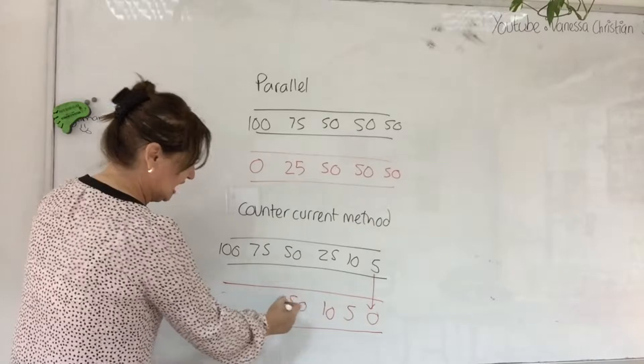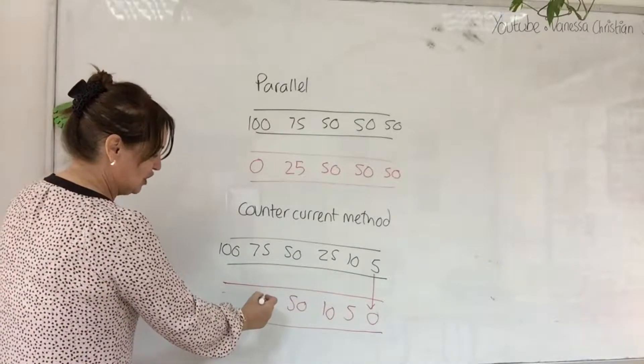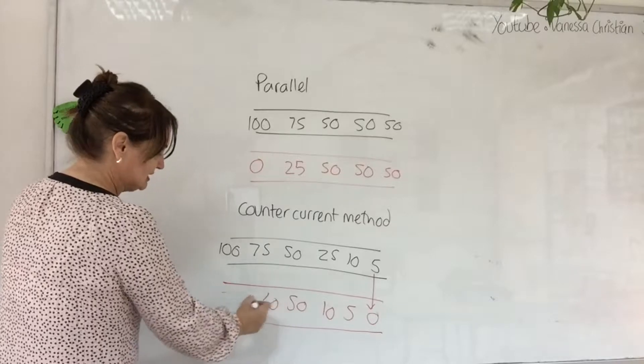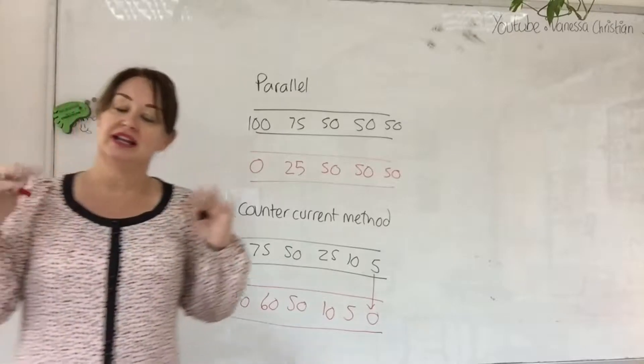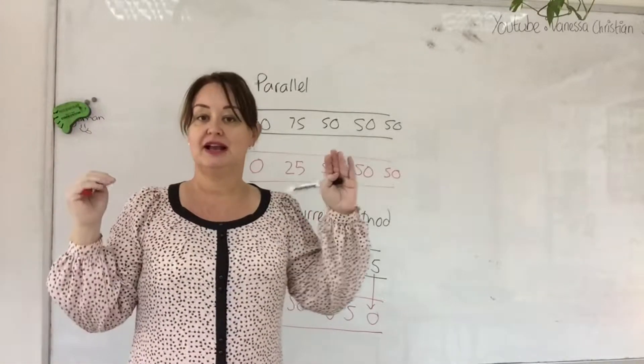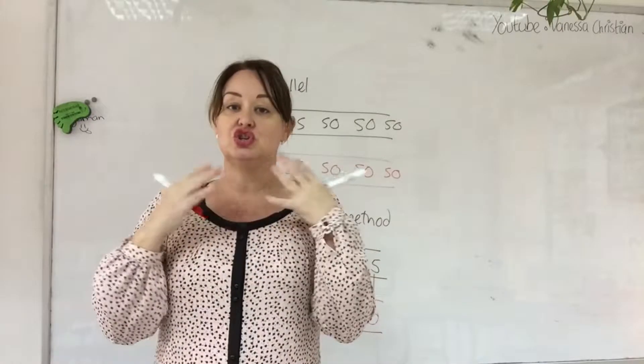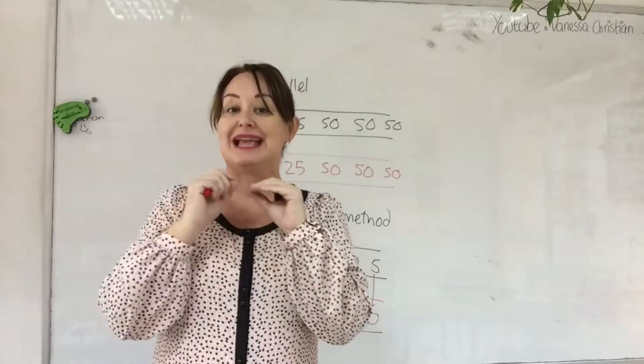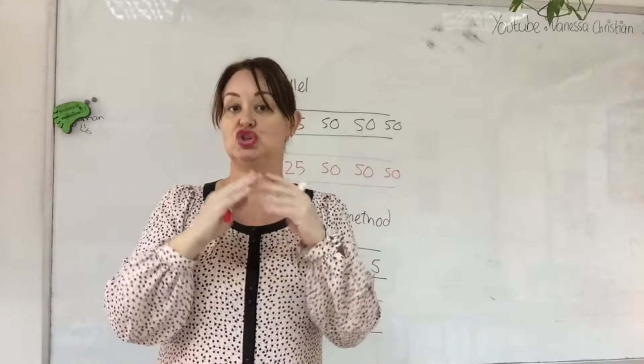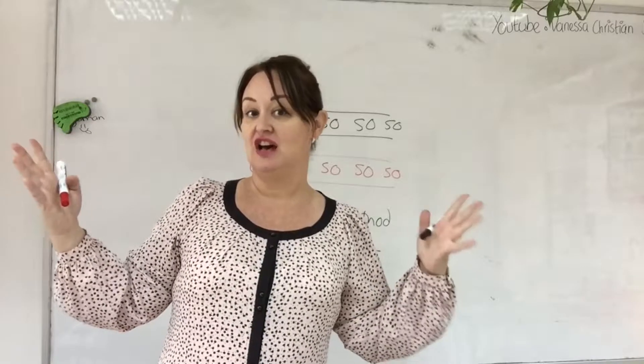Then that might become 5 and then that might become 50, and at this point here that's going to move over and that would become 60, and then that would come over and that would be 90. In terms of your language, counter current flowing in opposite directions ensures a more efficient exchange and it maintains the diffusion gradient along the length of the exchange surface.